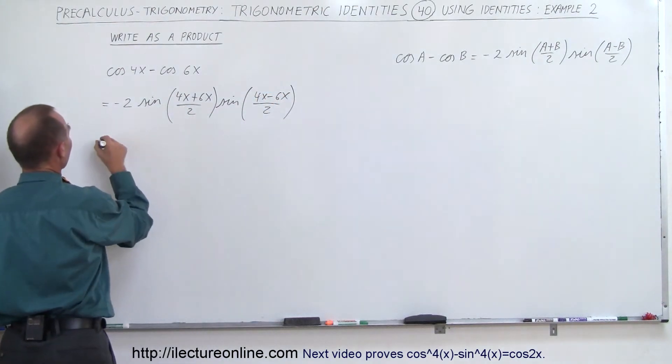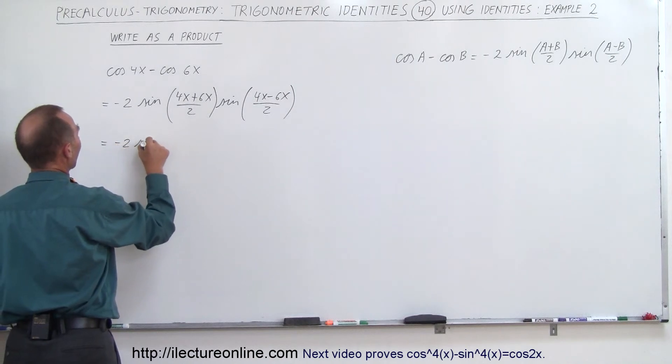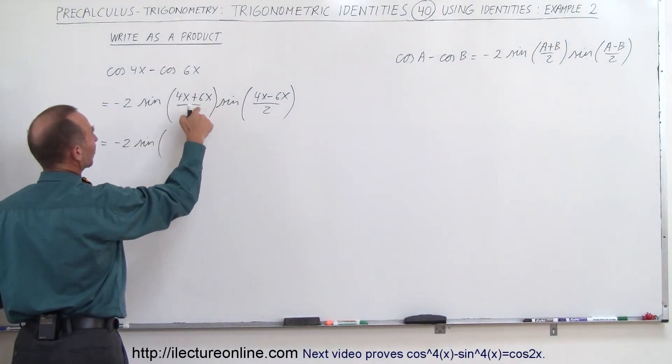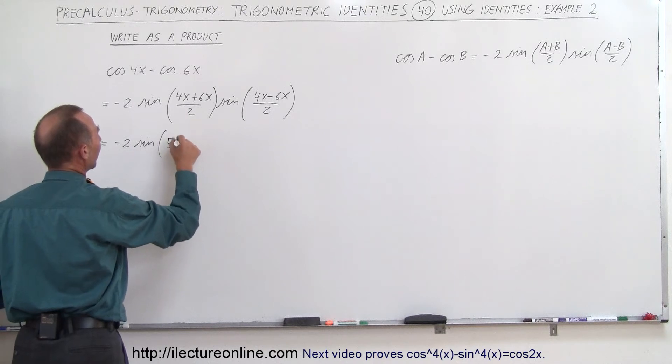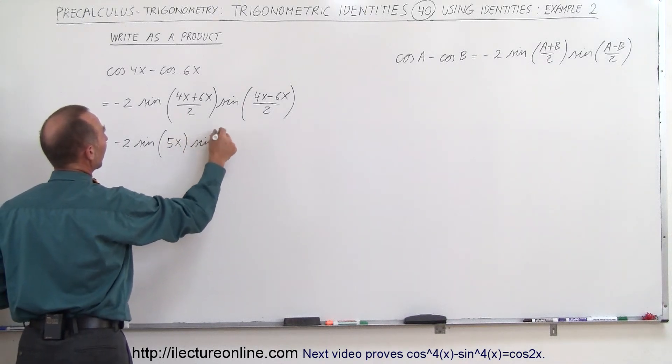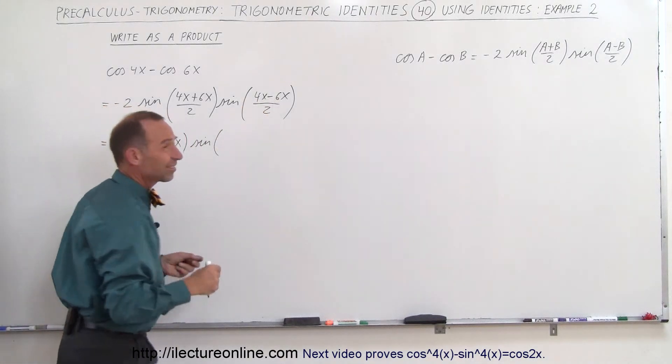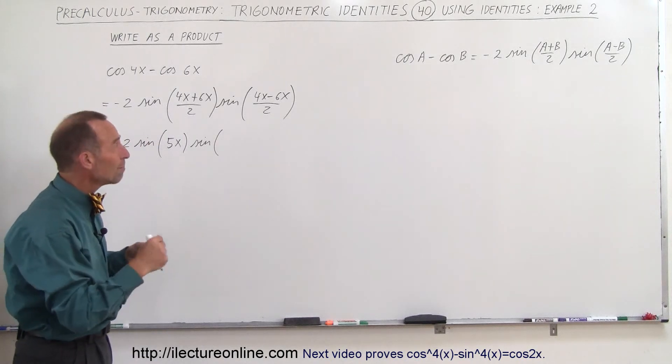Simplifying, that equals minus 2 times the sine of 4x plus 6x, which is 10x divided by 2, which would be 5x, times the sine of 4x minus 6x, which is minus 2x divided by 2, which is minus x.